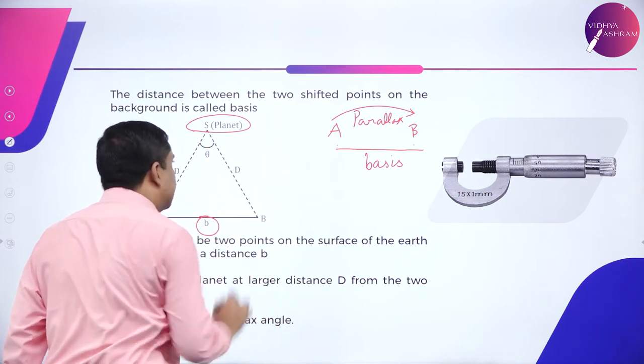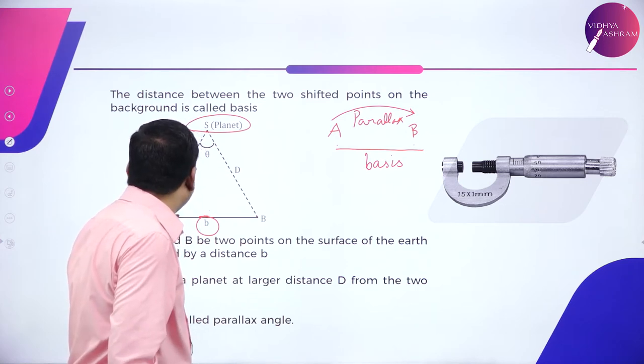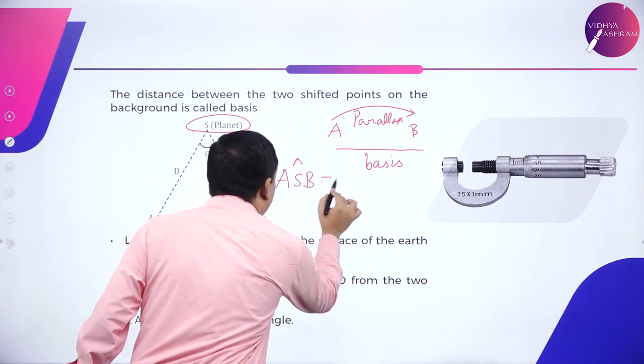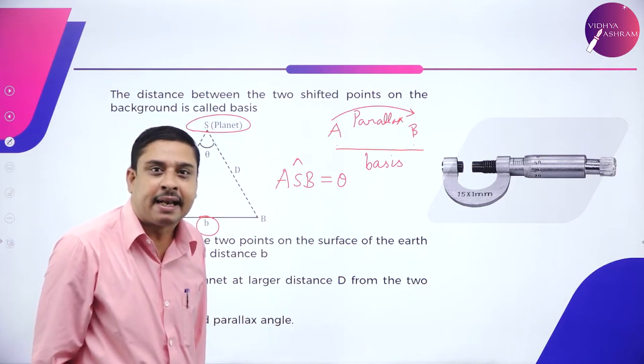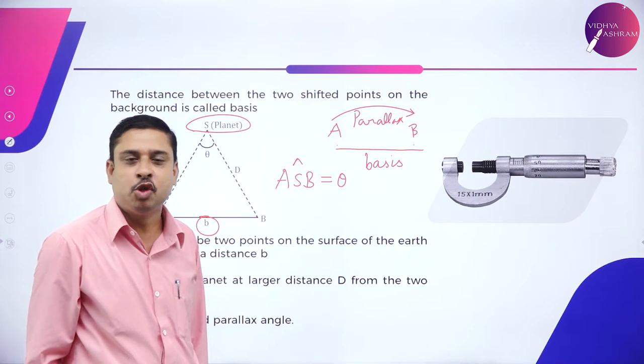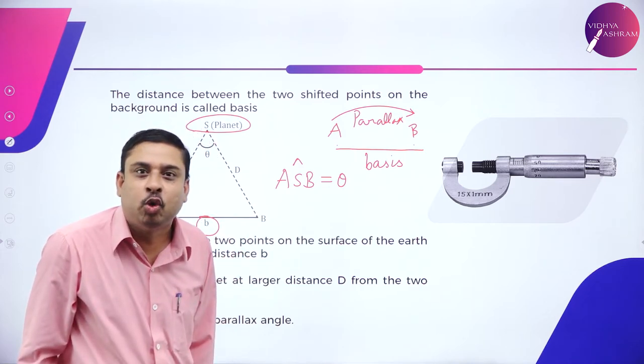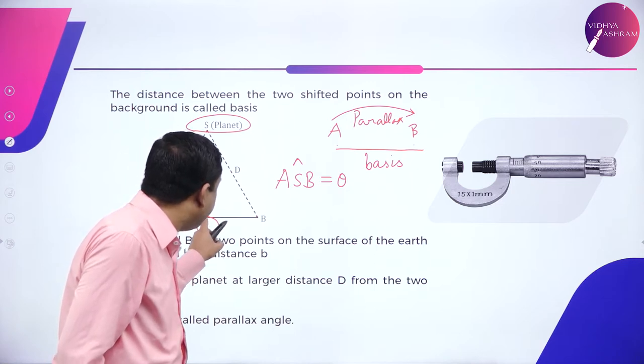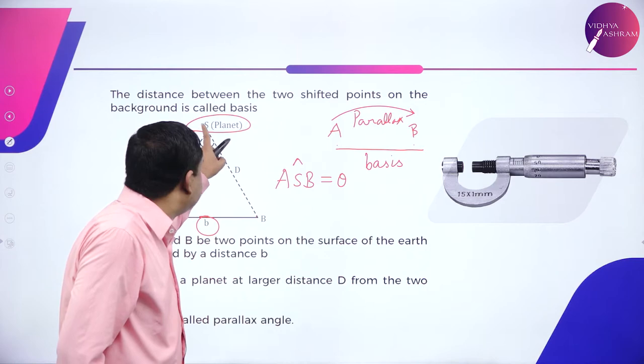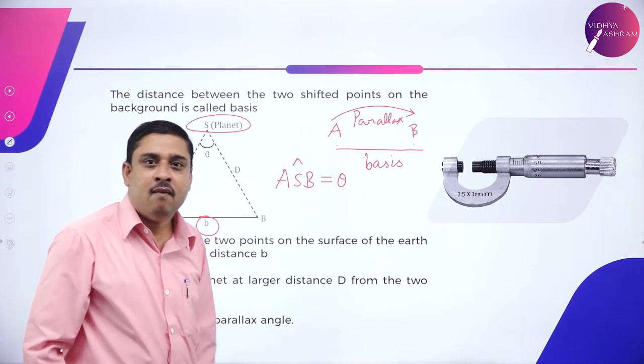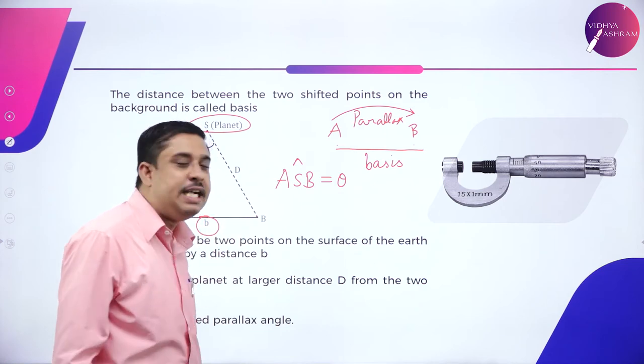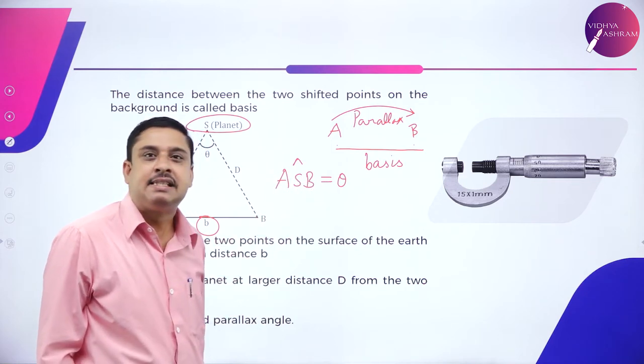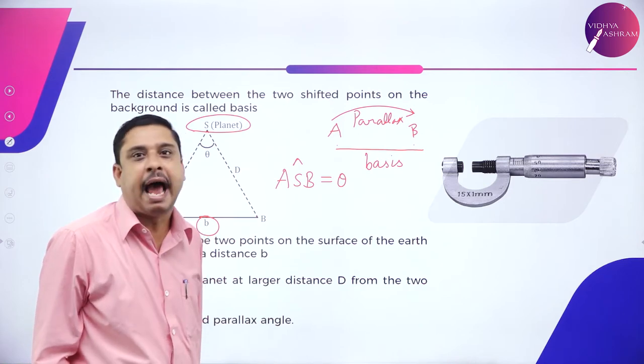And the distance from A to S is capital D. Again, B to S is capital D. And its theta angle A, B. This angle A, B is equal to theta which is called as the parallax angle. So, A and B are two points on the surface of the earth. They are separated by distance B.